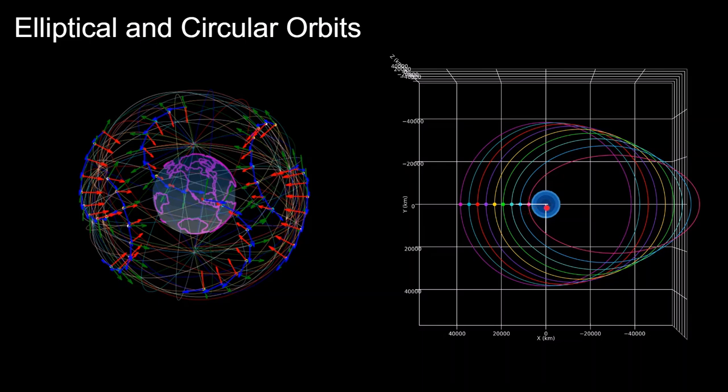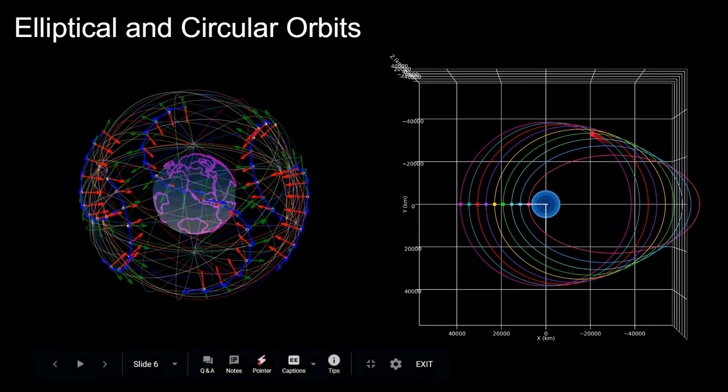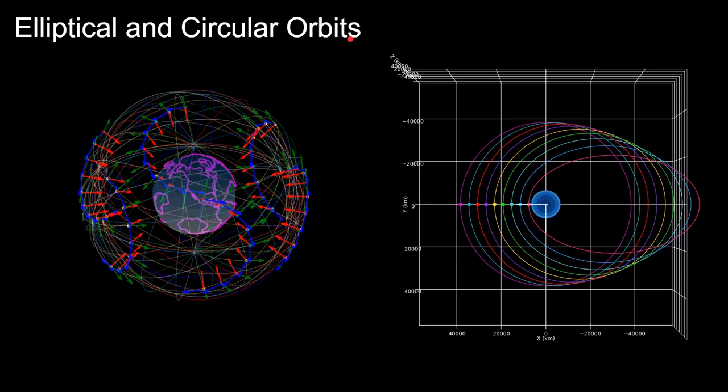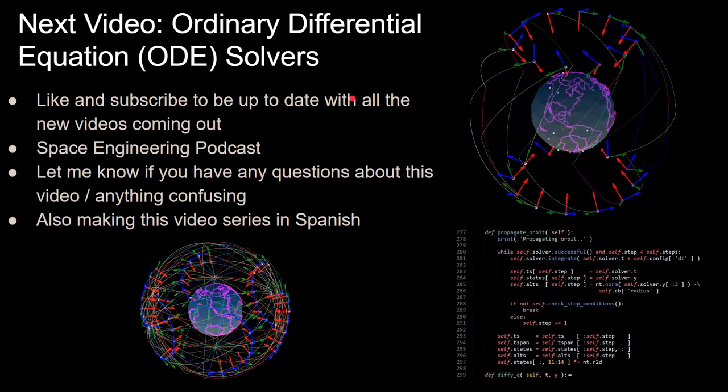And they can be very elliptical like this one in the red, where the point that is closest to the large body is very close compared to the point that is farthest away. And it can range all the way to a circular orbit, which is this purple one here, where every point is equidistant to the center at any time in the orbit. And I'll be going deeper into all the geometry of elliptical, circular, and hyperbolic orbits in future videos in this series.